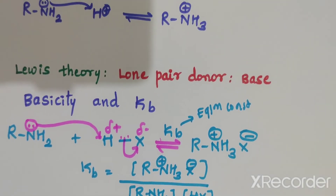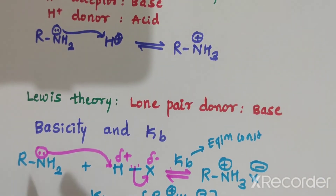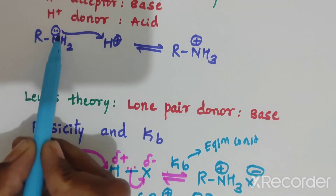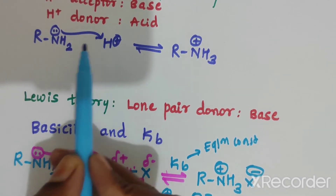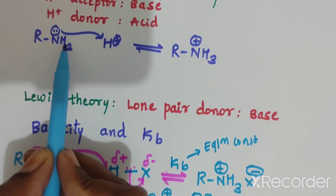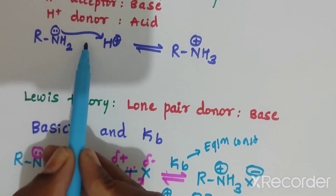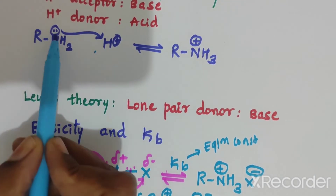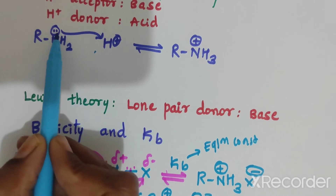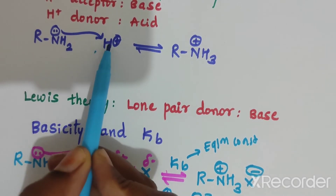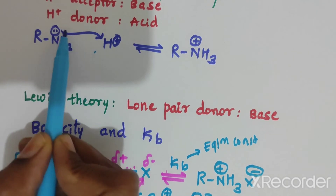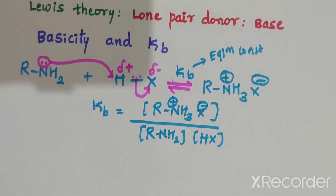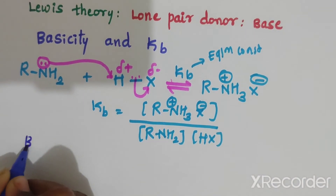We can say amines are basic in nature when they donate a lone pair of electrons and have a tendency to donate a lone pair, and when they can accept a proton. These are basic in nature. Basicity increases when electron density on nitrogen increases.